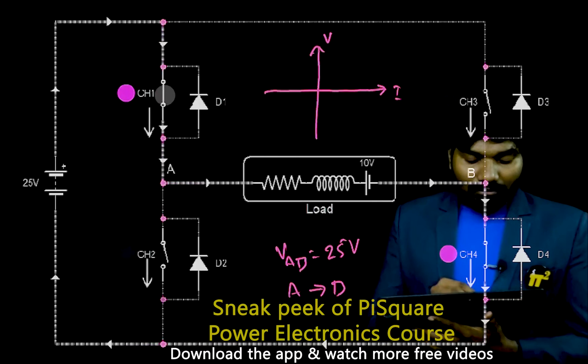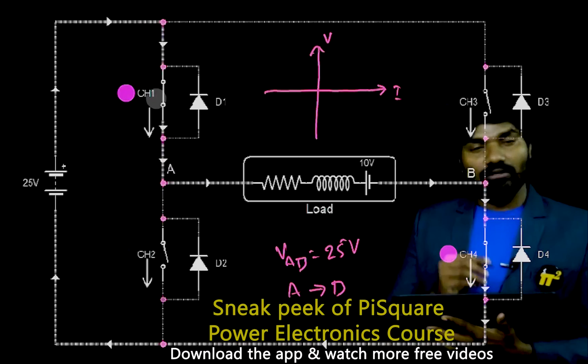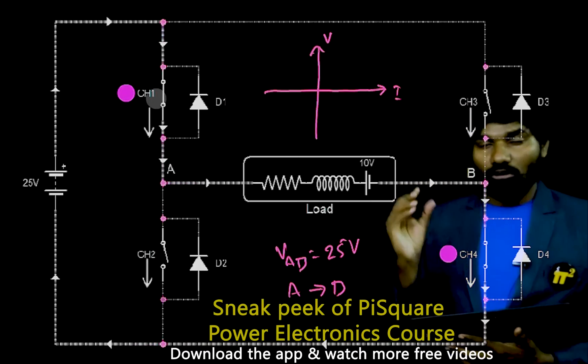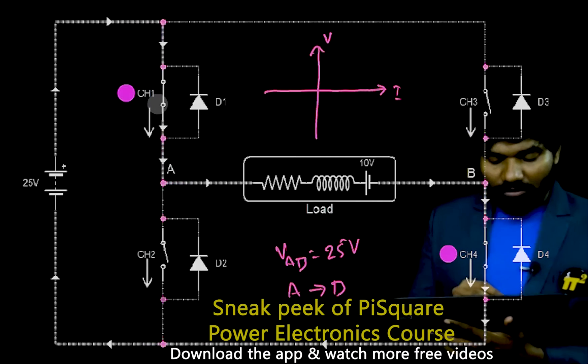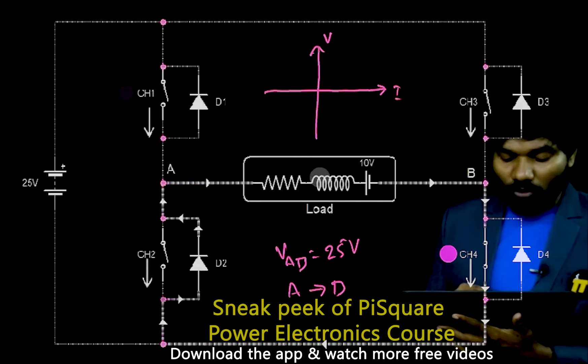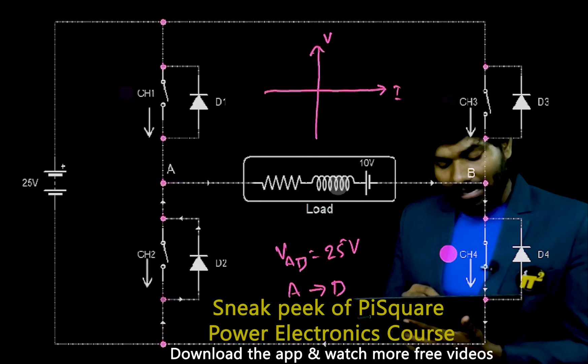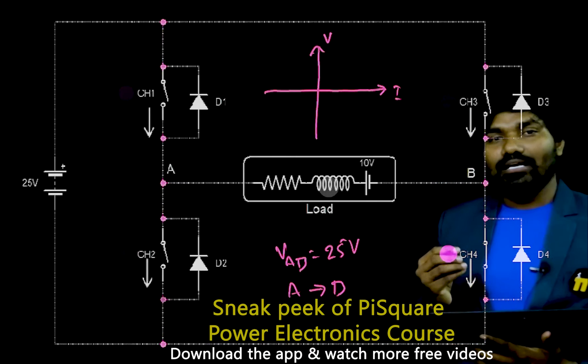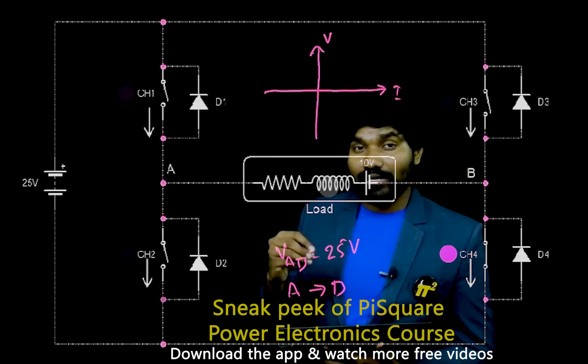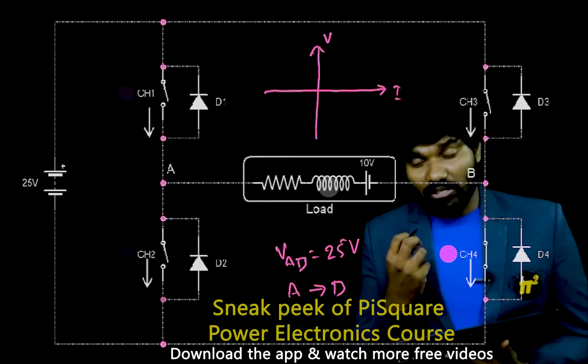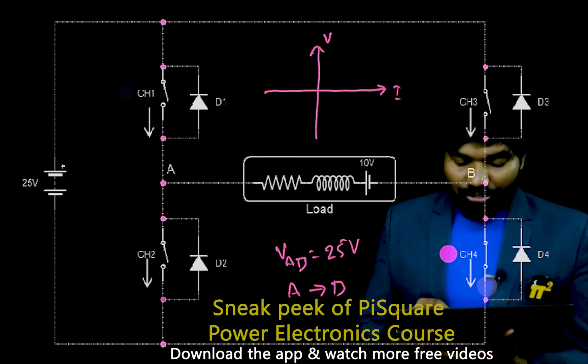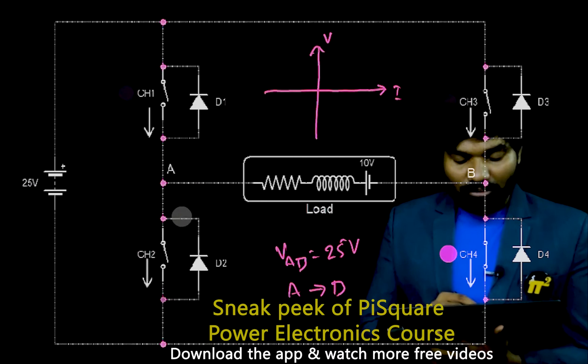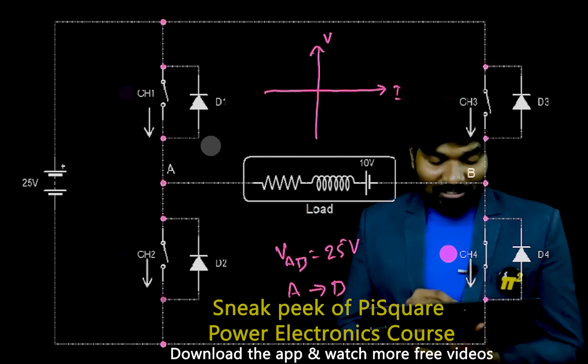Now, what if I turn this off? I am turning CH1 alone off. I am just turning off CH1. Then what will happen? Check it. We have inductor over here. That inductor will be discharging. In the earlier case, inductor has stored some charge. Now that inductor is getting discharged. It is already discharged.